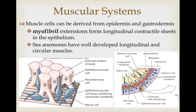The muscular system is fairly simple in cnidarians but more complex than the contractile cells seen in sponges. Cnidarians do have muscle cells, but since muscle cells in most animals are produced by mesoderm and cnidarians lack mesoderm, the muscle cells here are derived from the epidermis or gastrodermis. These epithelial muscle cells have extensions forming parallel sheets of myofibrils, making long contractile sheets that allow longitudinal and in some cases circular muscle contractions.